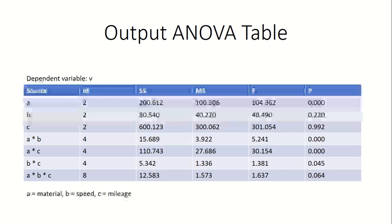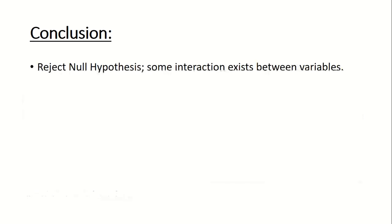After using Excel, a similar table will be generated. The probabilities in the P column are not all the same, showing that the means are not all the same. Therefore, we can reject the null hypothesis and conclude that some interaction does exist between these variables.